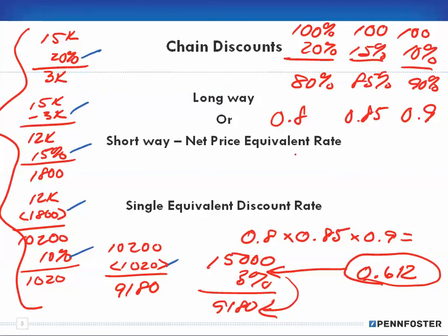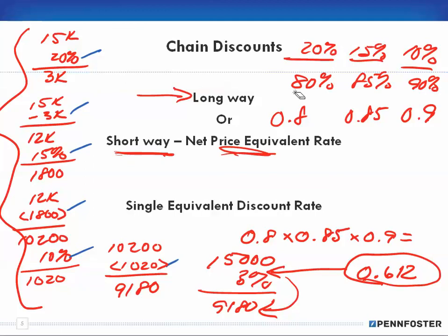There are far fewer calculations and it's easier to catch mistakes, which is why I call it the short way — the net price equivalent. I see so many students doing it the long way, and I don't understand why they don't just learn to use the net price equivalent rate.